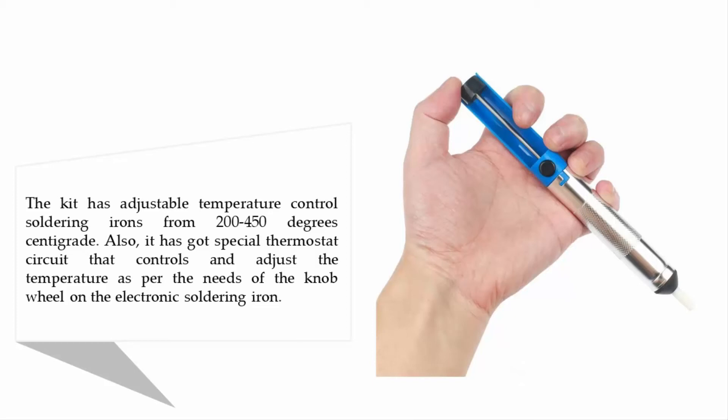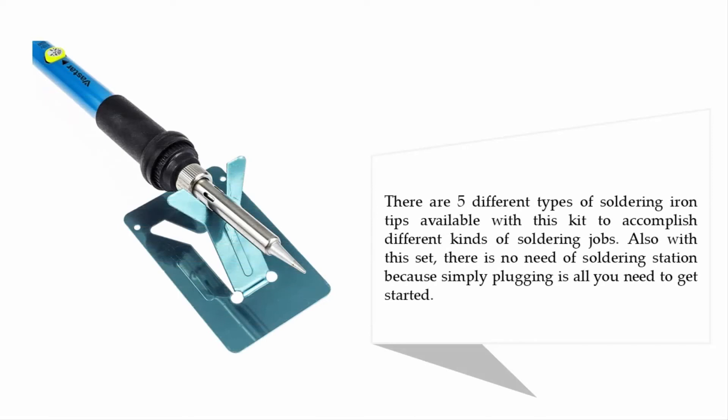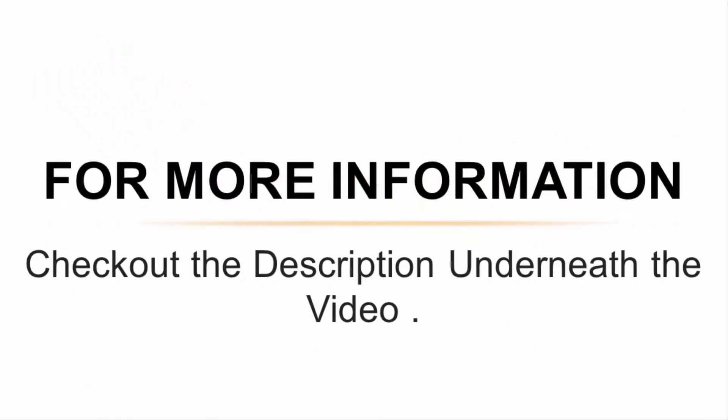There are five different types of soldering iron tips available with this kit to accomplish different kinds of soldering jobs. Also with this set, there is no need of a soldering station because simply plugging is all you need to get started. For more information check out the description underneath the video.